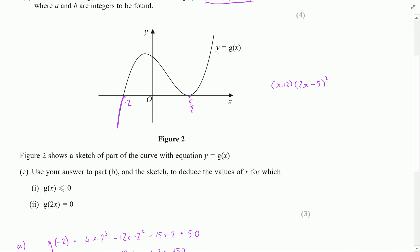So the solution for this is that x needs to be less than minus 2 because all of these x values down this way will give me negative g of x function. So x needs to be less than minus 2 or x could be equal to 5 over 2.